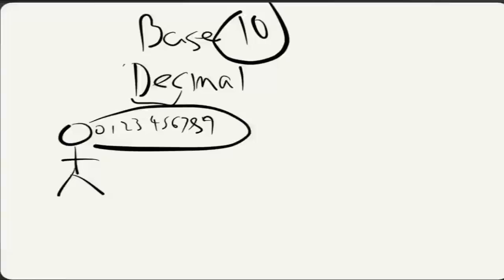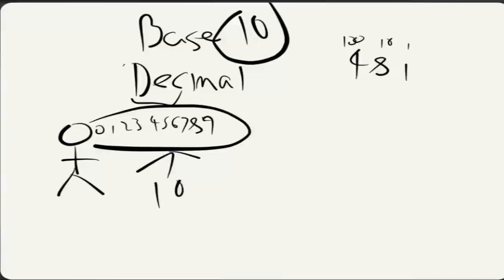So if we had a number of 481, and we want to represent it with our system using these 10 digits, we can do this by knowing that this is the 1s column, this is the 10s column, and this is the 100s column. So in order to represent our number, we use the 4 and go 4 times 100, which is 400. We go 8 times 10, which is 80.